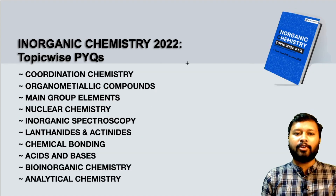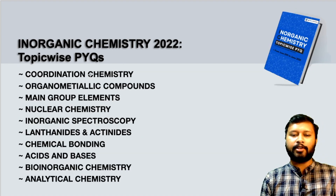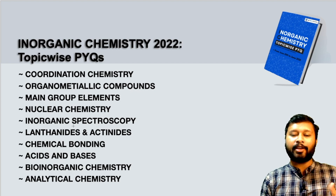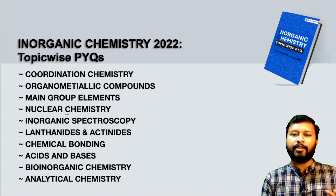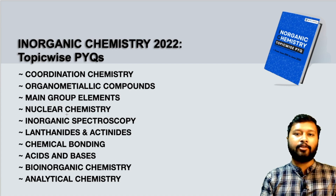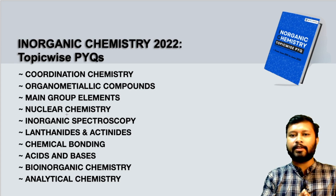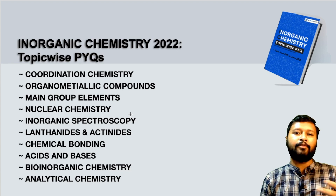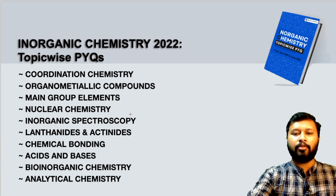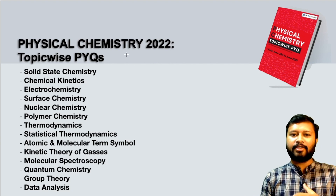The next ebook is for inorganic chemistry — 2022 version, topic-wise previous year questions. The chapters included are: coordination chemistry, organometallic compounds, main group elements, nuclear chemistry, inorganic spectroscopy, lanthanides and actinides, chemical bonding, acid-base chemistry, bioinorganic chemistry, and analytical chemistry. Every chapter has been updated based on questions asked in the 2021 exam. In all these chapters, questions and answers are separated out, making it easy especially for those preparing using this ebook.